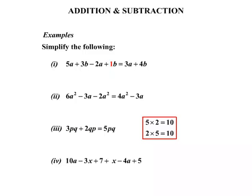Our final example in this lesson. We have 10a minus 3x plus 7 plus x minus 4a plus 5. Fairly long one. Let's just have a look at the plus x firstly before we do anything else. We can consider that as being 1x. Plus 1x.